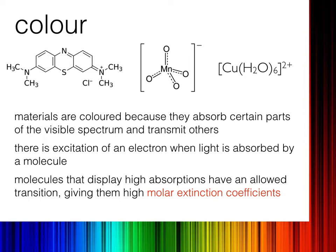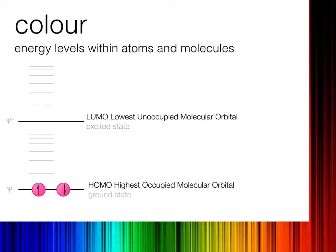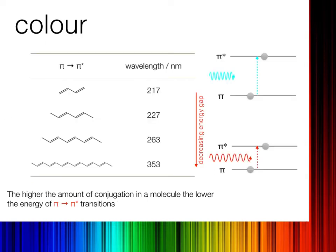Methylene blue has a very high extinction coefficient because the structure of the ground and excited states are very similar. We can see that it's not easy to change the structure of this molecule, particularly the double-bonded section, which is the root cause of the colour. The transitions within these molecules are simply to do with moving an electron from one orbital to the next, and as I do so, the wavelength of light observed differs depending upon the number of conjugated bonds within the molecule.